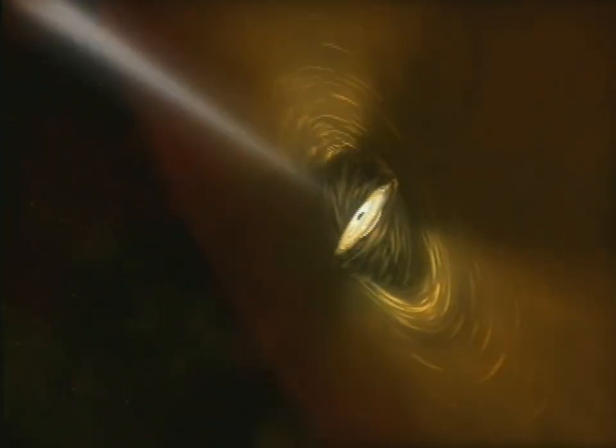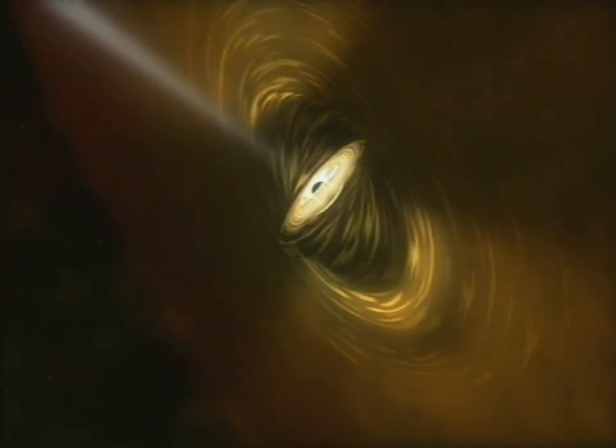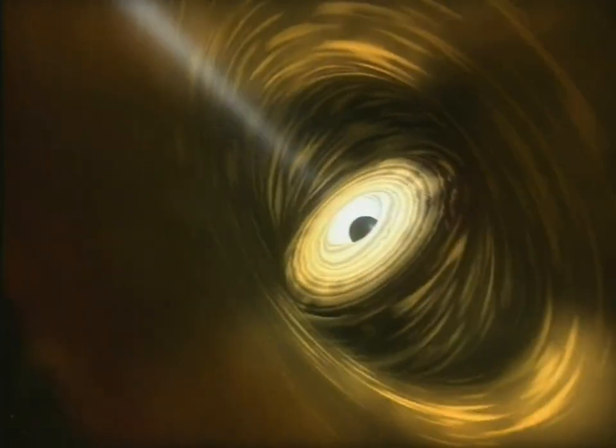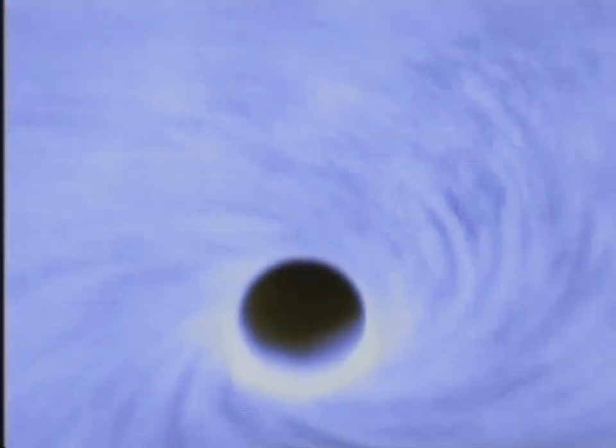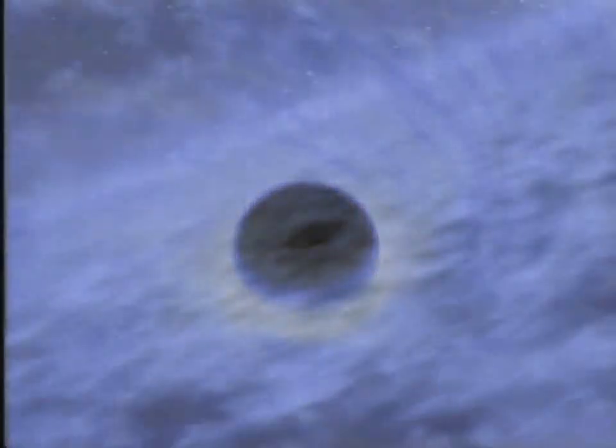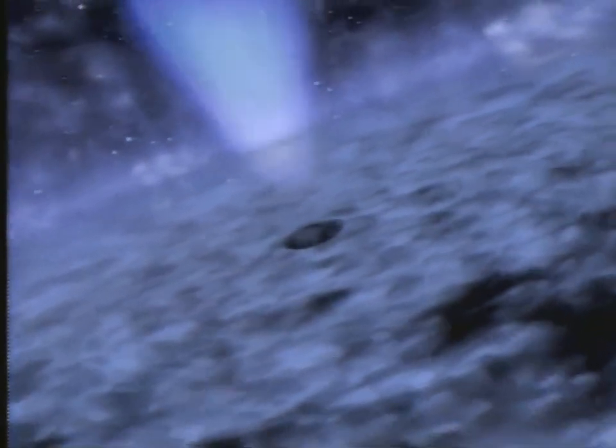Swirling matter and jets of energy just outside the event horizon often frame a black hole. This whirlpool of gas is an accretion disk. It can reach temperatures higher than one million degrees. X-rays and gas emitted by the accretion disk can jet out from either side into space.